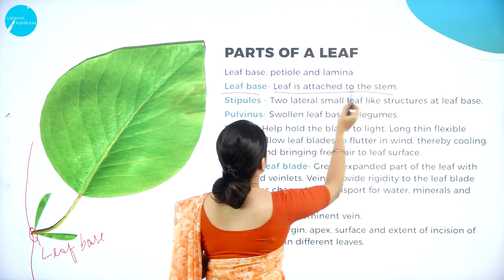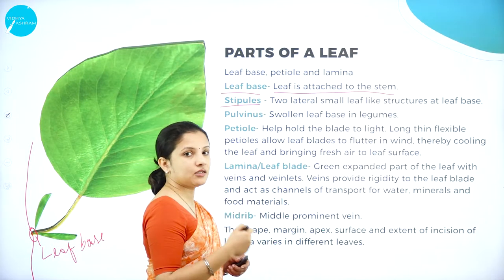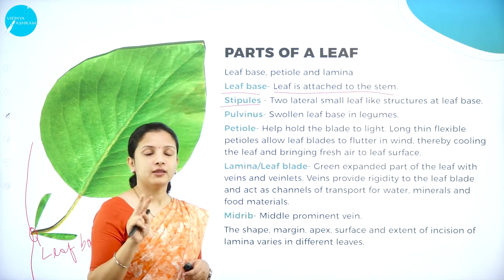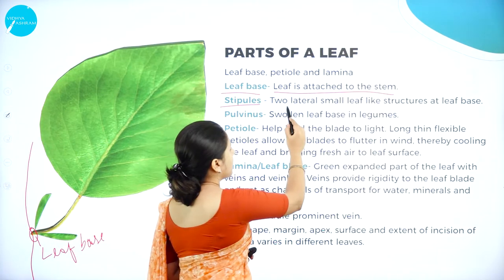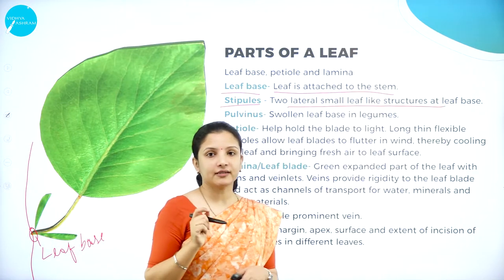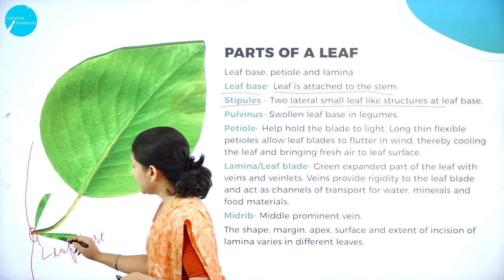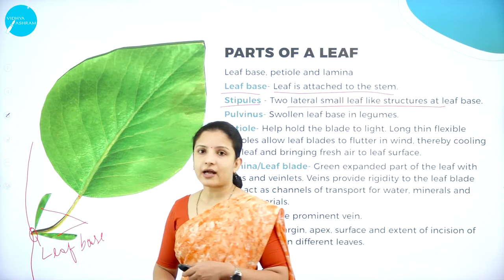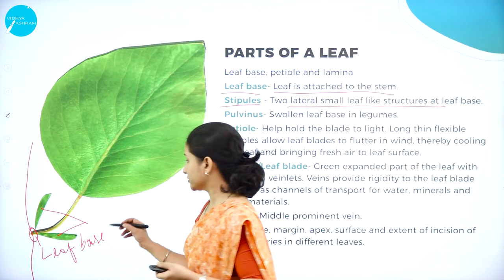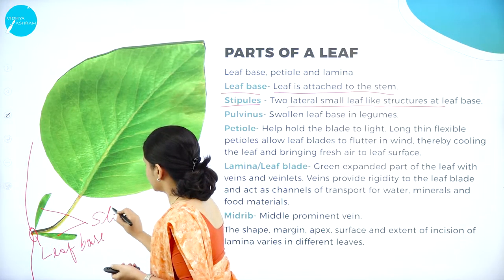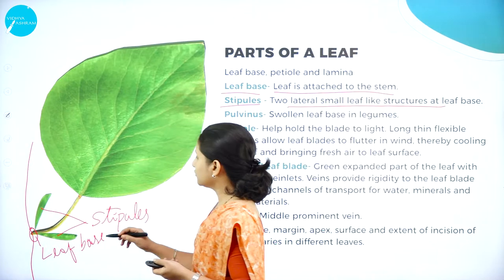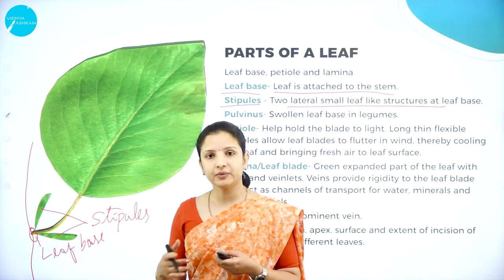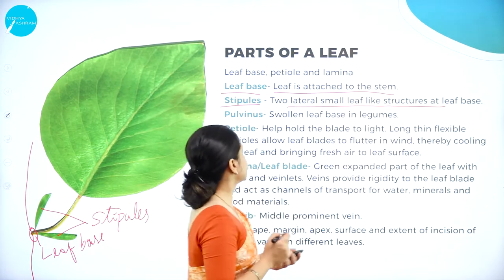The leaf is attached to the stem and it has stipules. Stipules are two small lateral leaf-like structures which are present at the leaf base. They are not actually leaves but they are leaf-like structures. These stipules actually provide protection to the developing leaves and also have chlorophyll, so they also help in photosynthesis.